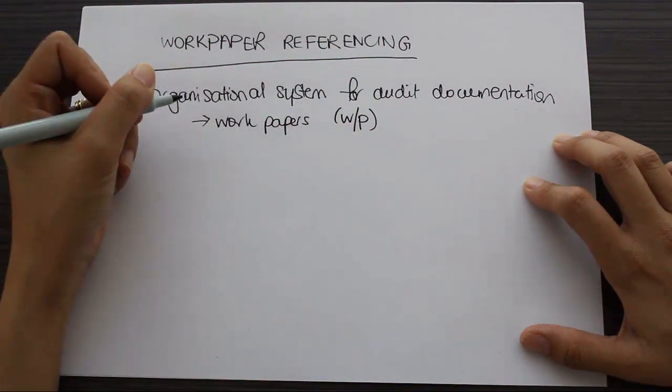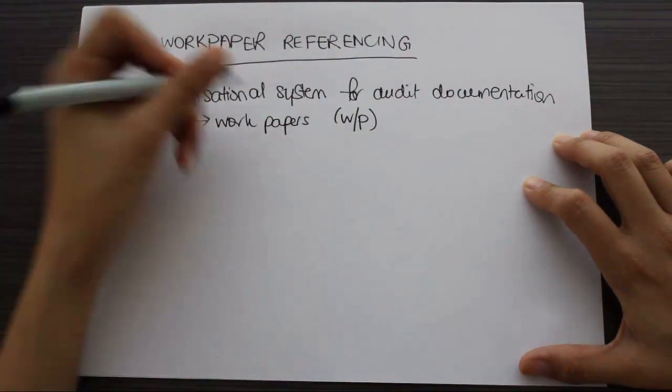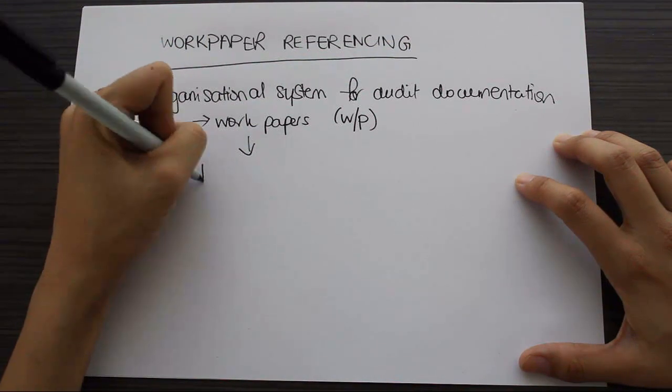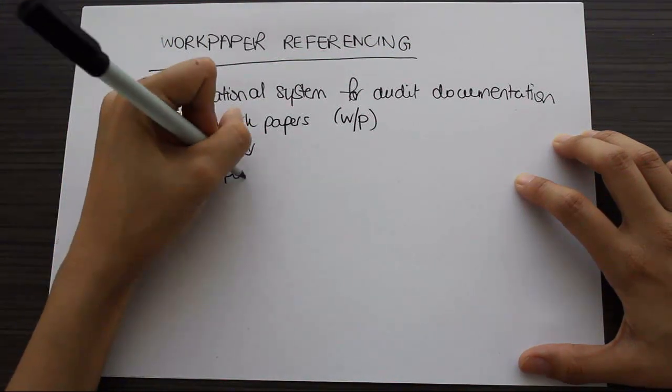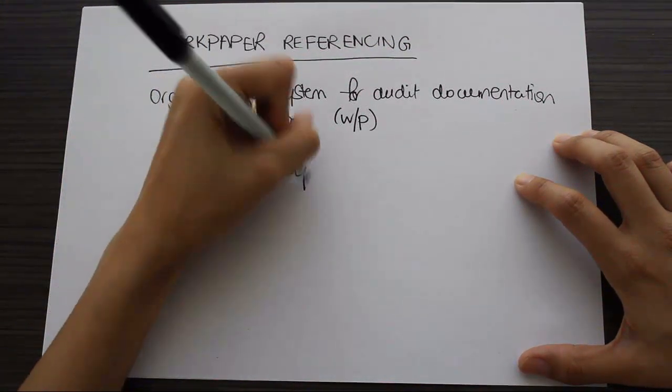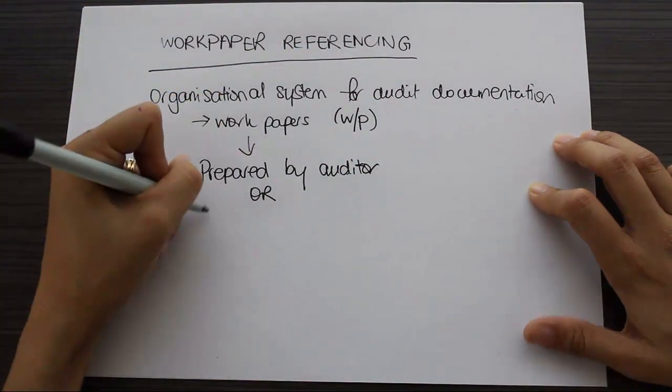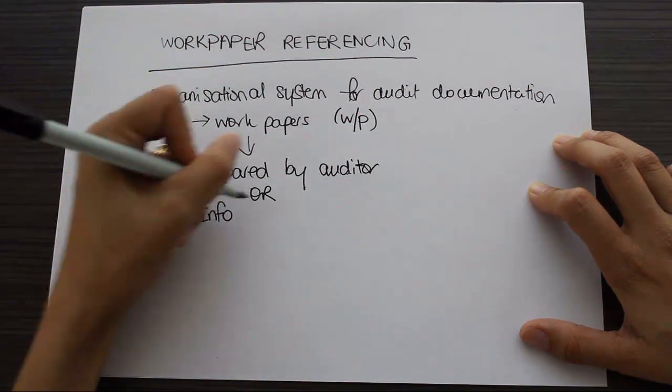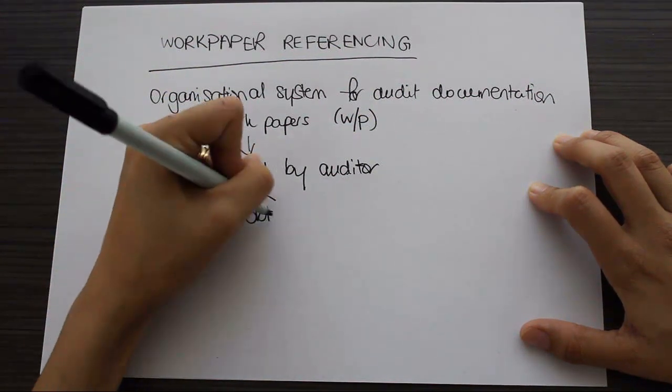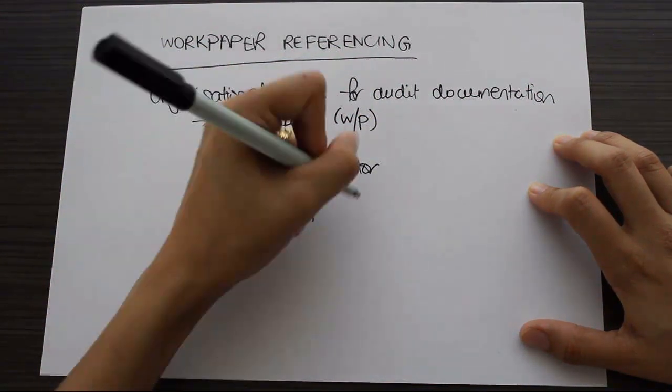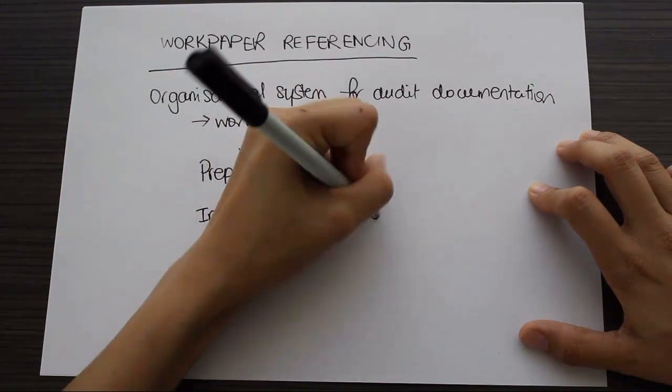So work papers can be ones that we've been preparing, prepared by the auditor, or they can be information obtained from the client or other sources.